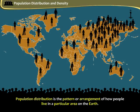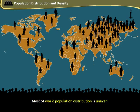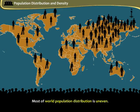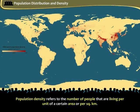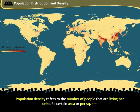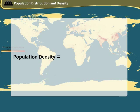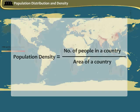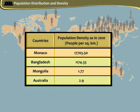Population distribution is the pattern or arrangement of how people live in a particular area on the earth. Population density refers to the total number of people per square kilometer, and is calculated by dividing the number of people in a country by the area of that country. The following table provides information on the population density of some countries.